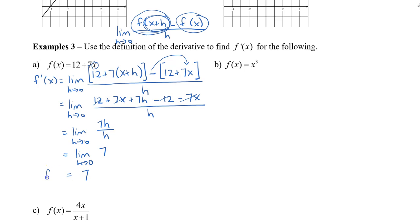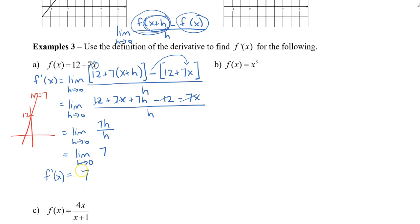Simplifying 7h divided by h gives 7, and since this has no h, the limit is simply 7. So the derivative of 12 plus 7x is 7. That makes sense because if we look at this graph, the y-intercept is 12 and the slope is 7 — so the slope is 7 in our function.